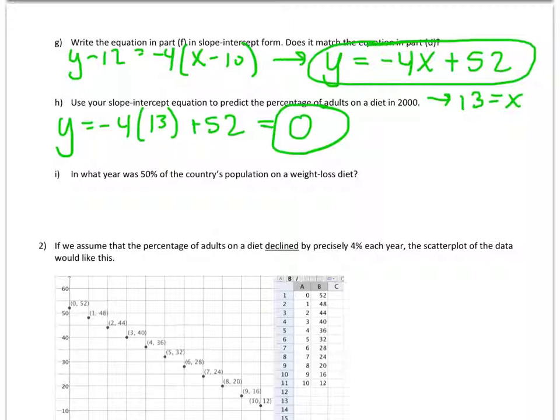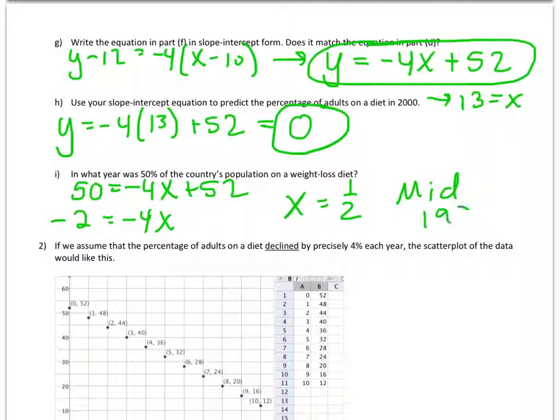In what year was 50% of the country's population on a weight-loss diet? So in this case, 50%, that's a y. So I have to replace the y with a 50. Negative 4x plus 52, and then I just want to solve for the x. So I have subtract 52 from both sides, divide both sides by negative 4, and you get x equals 1 half, which means it was still 1987, a half a year later. Mid-1987.